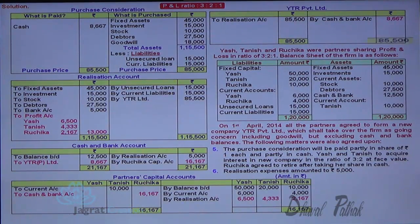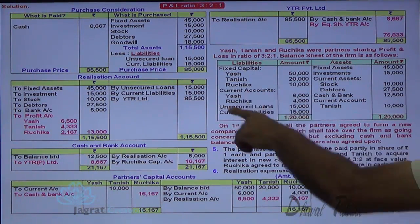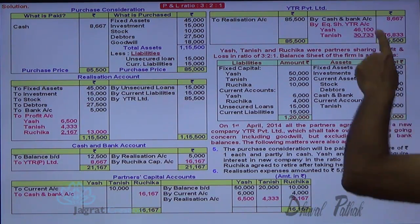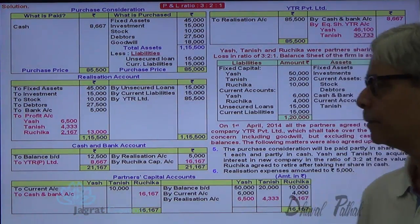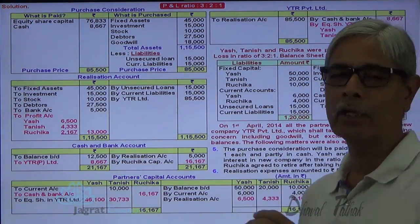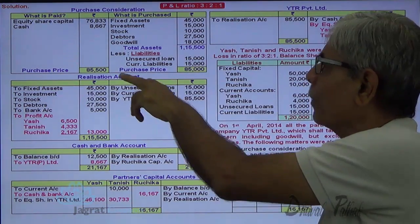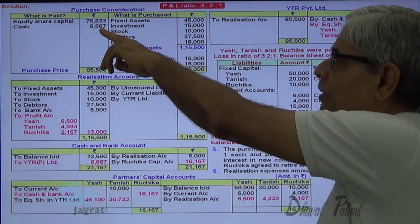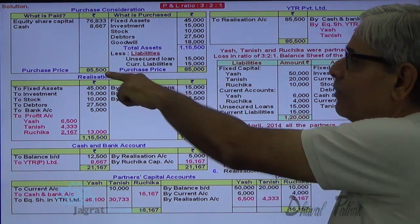The consideration received in the form of equity shares is 85,500 minus 8,667, which equals 76,833. These equity shares are distributed between Yash and Tanish in the ratio of 3 to 2. Yash gets three-fifths and Tanish gets two-fifths of 76,833. Partners have received the shares — debit the receiver — so the partners' capital accounts are debited. Out of 85,500, 8,667 is received in cash and 76,833 in equity shares. I apologize for the earlier mistake where I wrote 85,000; the correct purchase consideration is 85,500.